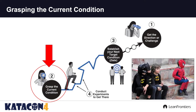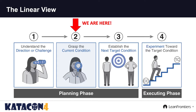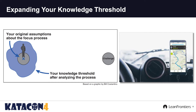We're still in the planning phase - grasping the current condition. We've established the challenge, now we've got to figure out where we are right now. One of the key purposes is that we want to understand the current performance and operating pattern that exists so that we can expand our knowledge threshold. One of the more contentious points is it's really not about finding wastes. As those who learned lean many years ago, that was one of the exciting points - hey, I'm going to go grasp the current condition because we're going to go on a waste walk. That's not the purpose.